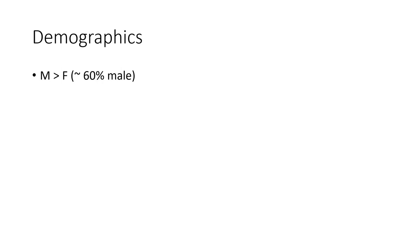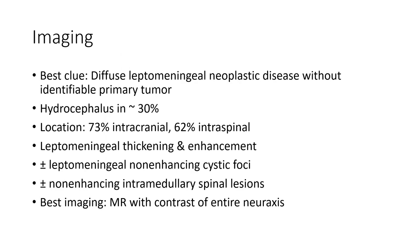Predominant in males, up to 60%. The best clue is diffuse leptomeningeal neoplastic disease without an identifiable primary tumor. Hydrocephalus in 30%, location: 73% intracranial, 62% intraspinal. Leptomeningeal thickening and enhancement, plus or minus leptomeningeal non-enhancing cystic intramedullary spinal lesion. Best imaging is MRI with contrast of the entire neuroaxis.